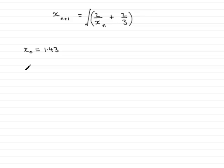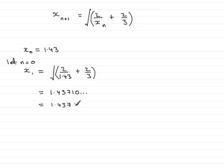Well, to get x1, what I've got to do is let n equal 0. Why? Because this will be x0 plus 1, in other words x1, and it will equal the square root of 2 over x0 plus two thirds. So we'll just put that in: 2 over x0, and we know that x0 is 1.43, plus the two thirds on the end here. If you work that out on your calculator, you should find that you get 1.43710 and so on. So giving this to four decimal places, we end up with 1.4371 to 4dp.